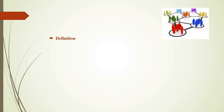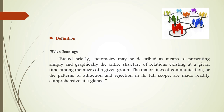Let's see the definition of Sociometry. According to Helen Jennings: stated briefly, Sociometry may be described as a means of presenting simply and graphically the entire structure of relations existing at a given time among members of a given group. The major lines of communication, or the patterns of attraction and rejection in its full scope, are made readily comprehensible at a glance.